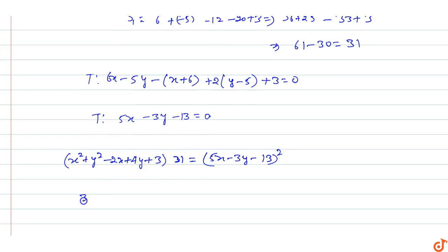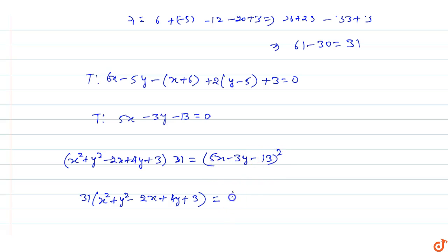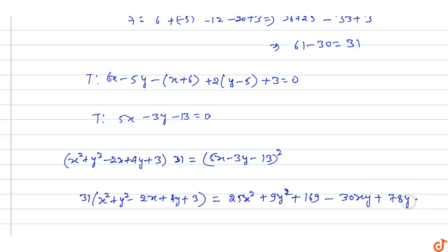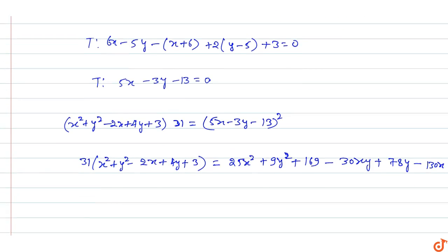Expanding the right-hand side: 31(x² + y² - 2x + 4y + 3) = 25x² + 9y² + 169 - 30xy + 78y - 130x.